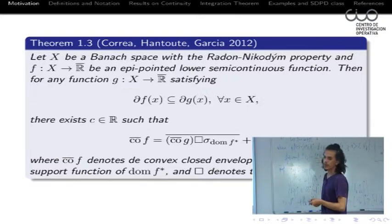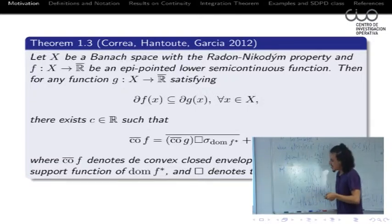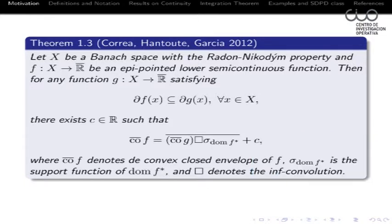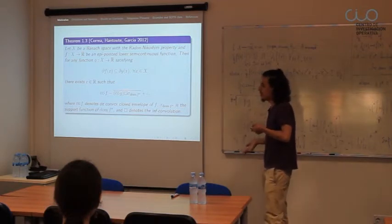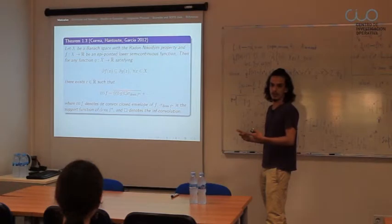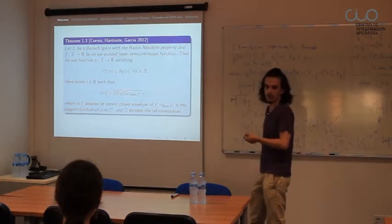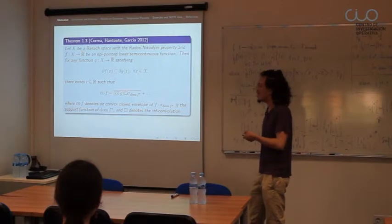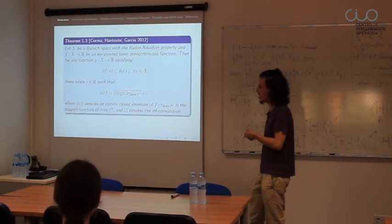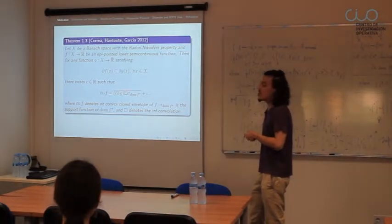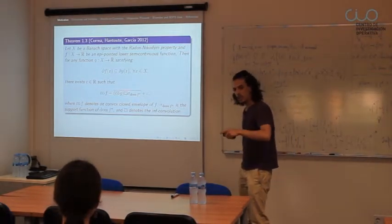People from Murcia are already familiar with this. This formula doesn't look like the original one where the two functions were equal, but we cannot expect any better. First of all, this is a convex integration, so we have to take the convex hulls of the functions. And basically, this inf-convolution with the support of the domain of F* is because we are no longer in the convex case.